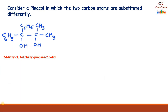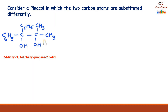We have seen the mechanism of pinacol-pinacolone rearrangement. Now let's consider another example in which the two carbon atoms are substituted differently. In this compound, 2-methyl-3,3-diphenylpropane-2,3-diol, one carbon atom has two phenyl groups while the other carbon has two methyl groups. In the earlier example both carbon atoms were substituted by methyl groups, but here the two carbon atoms are substituted differently.